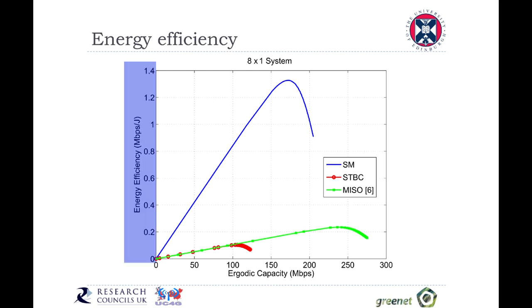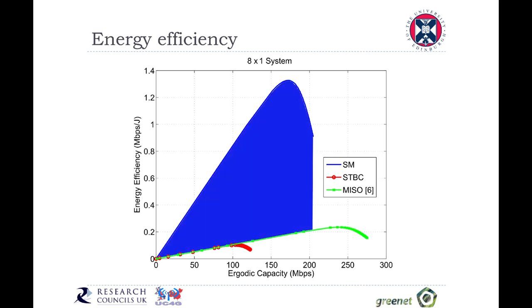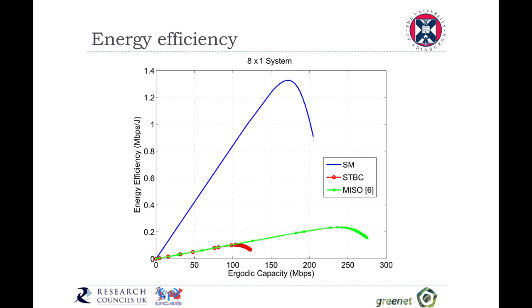What this diagram shows is the energy efficiency versus the ergodic capacity for a system that is composed of eight transmit antennas and one receive antenna. What we notice here is that spatial modulation is significantly more energy efficient compared to all the other MIMO systems. For example, if we take a capacity of 150 megabits per second, spatial modulation achieves more than 1.2 megabits per second per joule, whereas all the other classical MIMO systems achieve only about 0.2 megabits per second per joule.